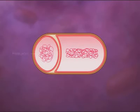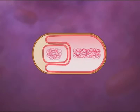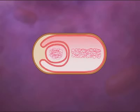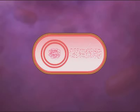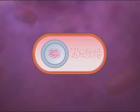The mother cell membrane continues to grow and engulfs the developing spore. The developing spore is now surrounded by two membrane layers. Next, peptidoglycan is laid down between the two membranes of the developing spore to form the cortex.